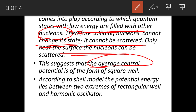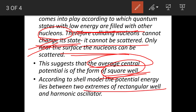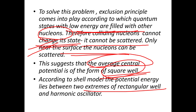This suggests that the average central potential is of the form of a square well. According to the shell model, the potential energy lies between two extremes: the rectangular well and the harmonic oscillator. Today we covered up to this point; in the next video we will derive the formula for the potential energy.